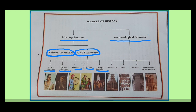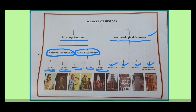Archaeological sources means things we find with the help of excavation, or the remains of the past. Archaeological sources are further divided into four parts: first, monuments — including temples, buildings, forts, and palaces; second, coins — like gold and silver coins used by kings; third, inscriptions — engraved writing on pillars and walls; and fourth, other archaeological remains such as artifacts and ruins found through excavation.